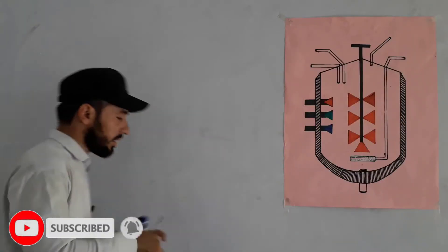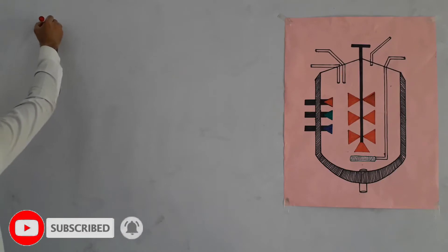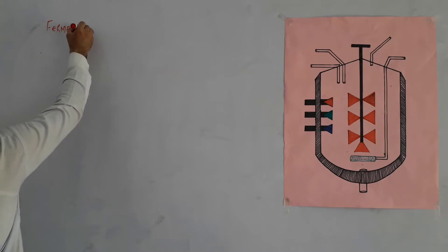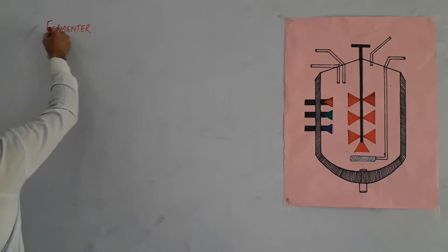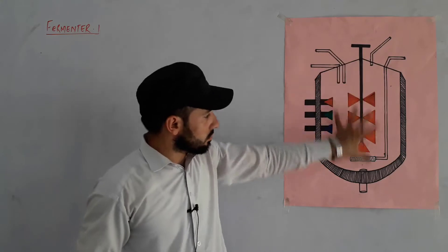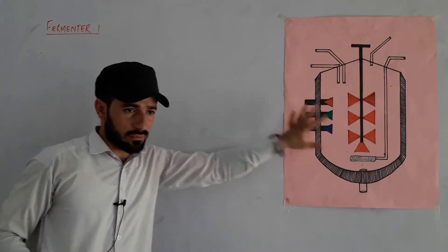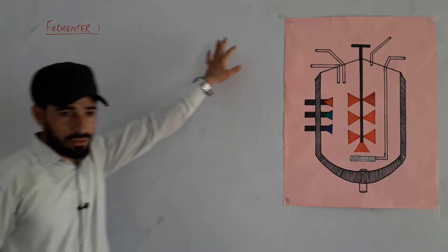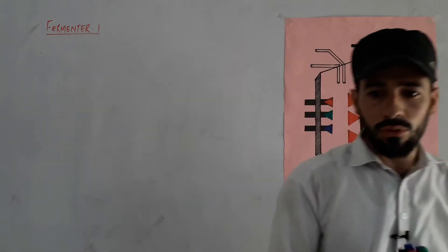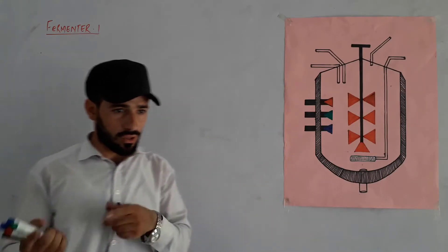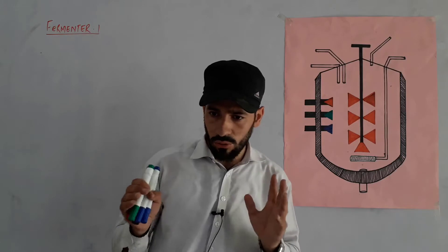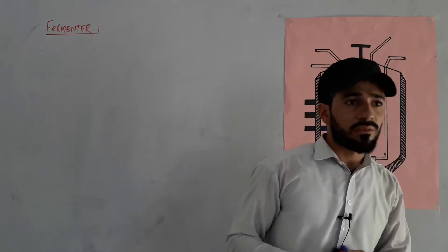Okay, so the topic today is fermenters. What is a fermenter? Fermentation is a process where glucose is converted anaerobically — producing lactic acid or alcohol. So what is a fermenter? It is the vessel in which this fermentation process takes place.